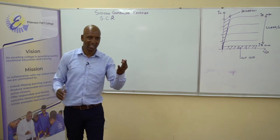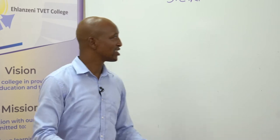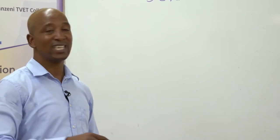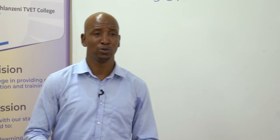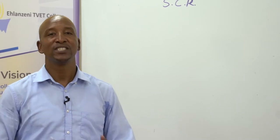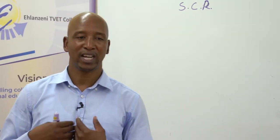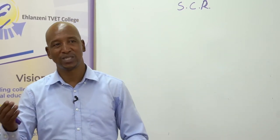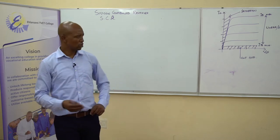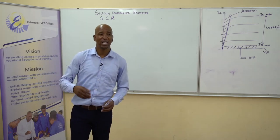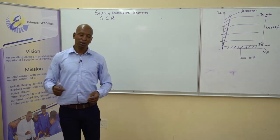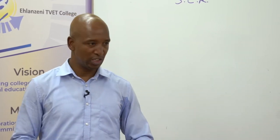The SCR is a member of the semiconductor PNPN family called a thyristor. It's a three-terminal device, just like a transistor, but with three junctions this time. Transistors have two junctions; the SCR has three junctions with four layers, and it's a switching device. It is mostly used in power control.